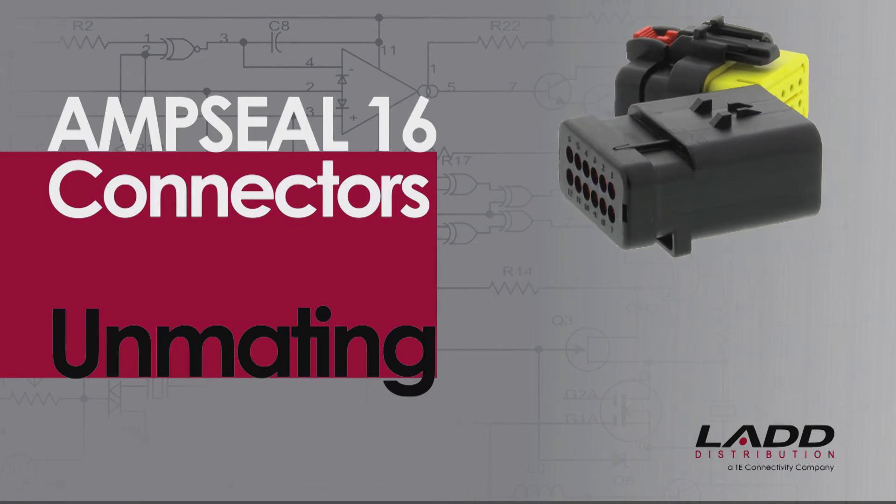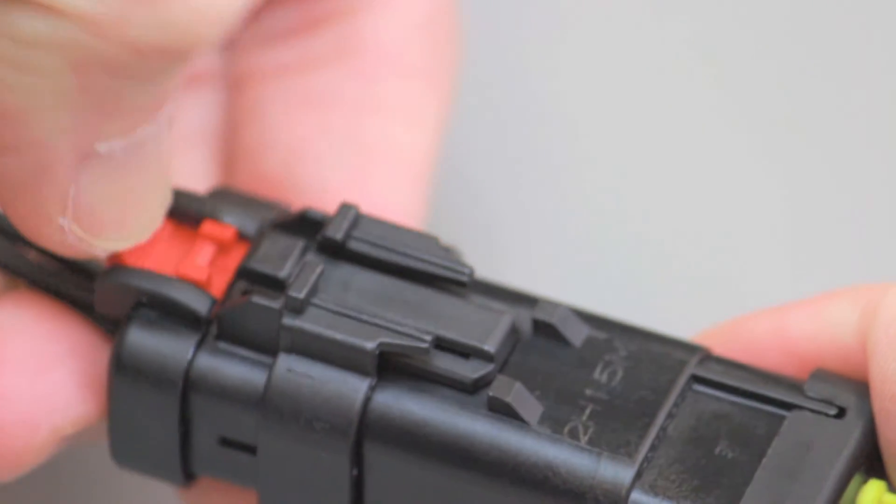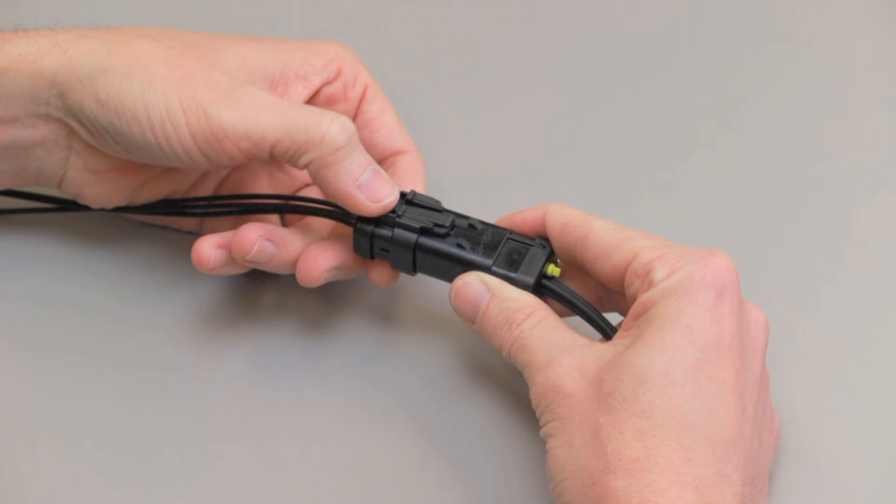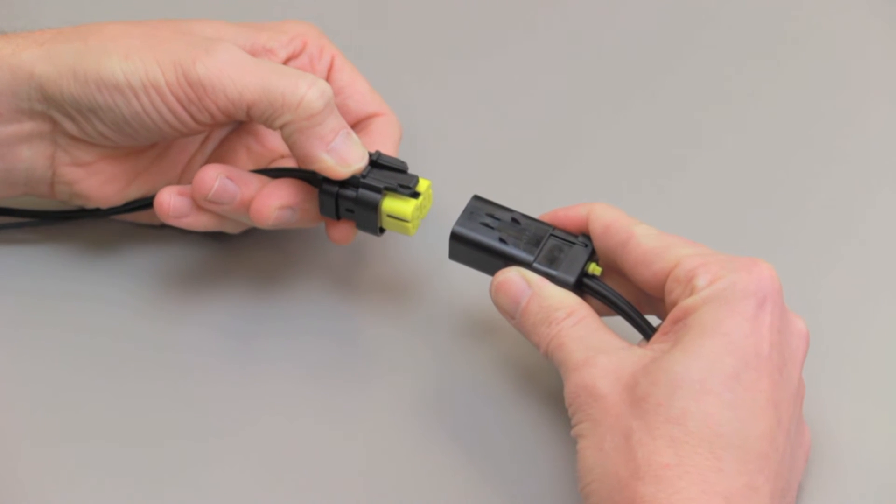AmpSeal 16 connector unmating. Push the connector position assurance to the unlocked position. Depress the locking latch on the outside of the receptacle contact housing and pull it apart from the pin contact housing.